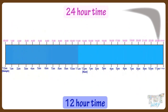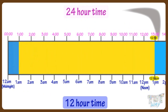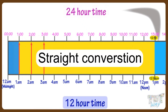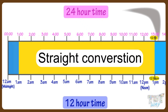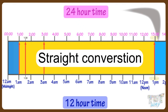From the time 1 a.m. to 12:59 p.m., it is a straight conversion from 12-hour clock system to 24-hour clock system — we just remove the a.m. or p.m. symbol. For example: 1 a.m. is 1, 1:30 a.m. is 1:30, and 3 a.m. is just 3 in the 24-hour clock system. The same is true up to 12:59 p.m.